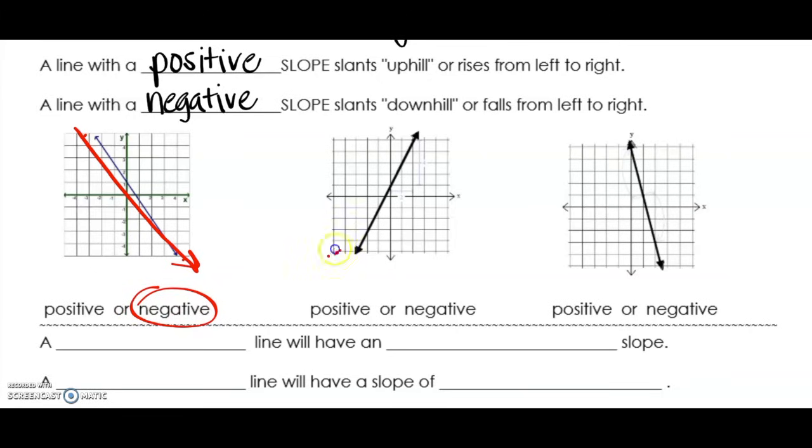The left side of this line to the right side of this line, it is rising from left to right, so that slope would be positive.